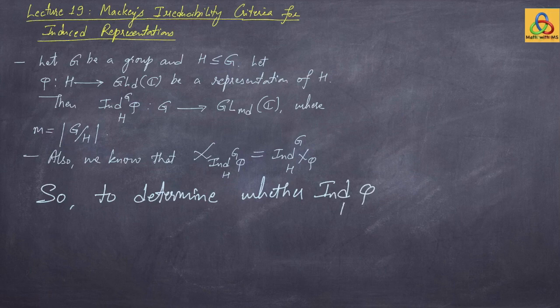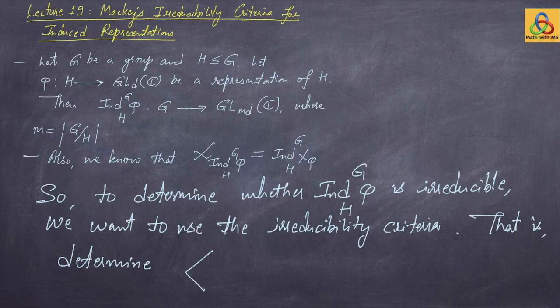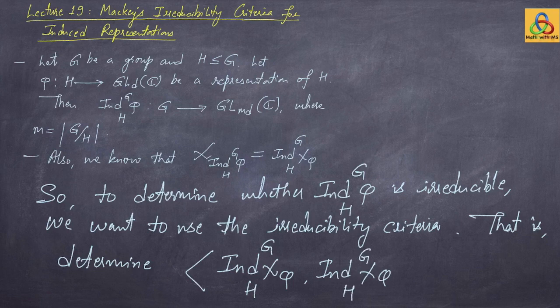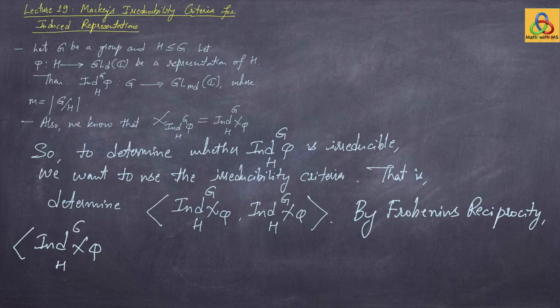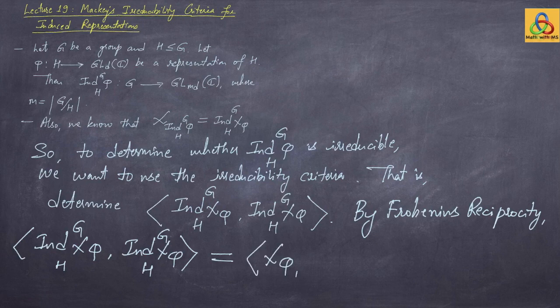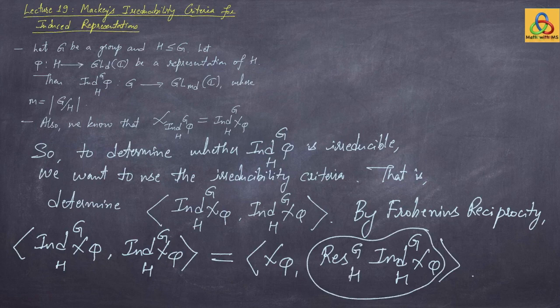To determine whether the induced representation of phi from H to G is irreducible, we need the inner product of the induced character with itself to equal 1. By Frobenius reciprocity, the inner product of the induction of chi_phi from H to G with itself equals the inner product of chi_phi with the restriction from G back to H of the induction of chi_phi. So we need to understand this composite operation: induction followed by restriction.